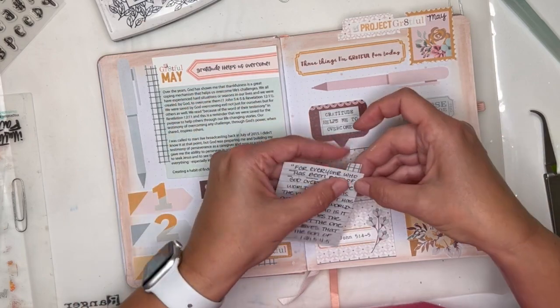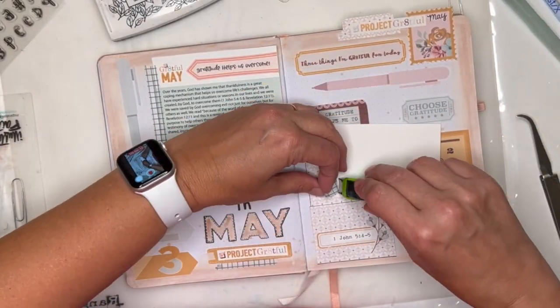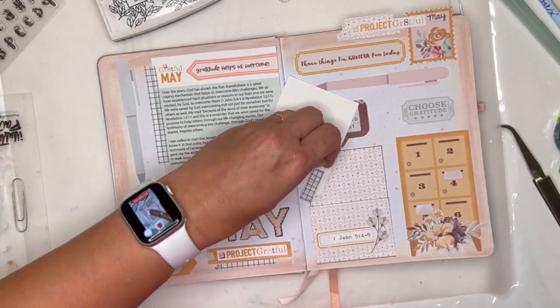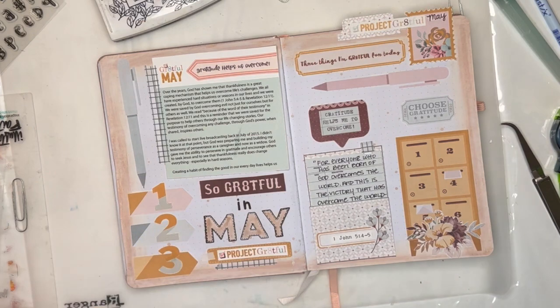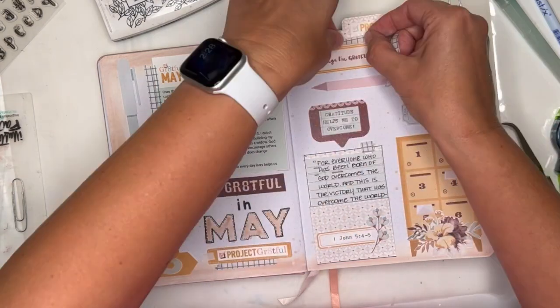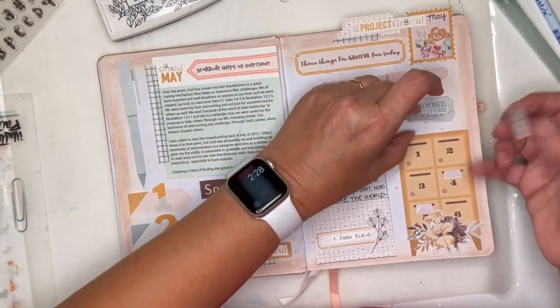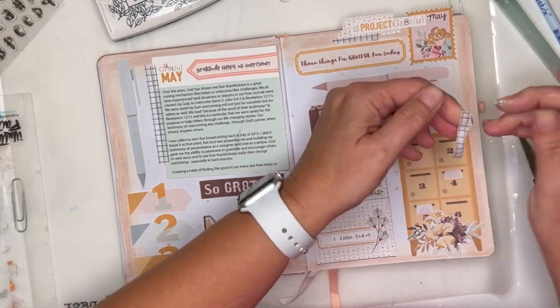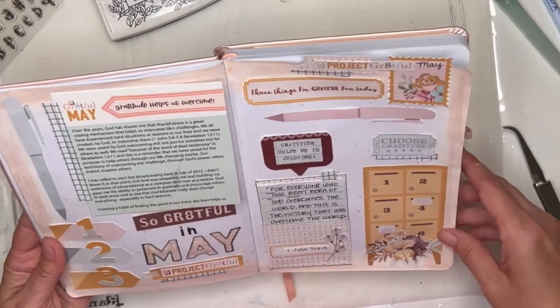I use the same washi tape that I adhered the journaling card and I'm just going to add that in a few places around my page. Make a little tag with my tiny attacher and that washi tape so that you can pull that card up and down. I'm going to add some up to the tab at the top right, then a little bit underneath that ticket that says 'choose to be grateful.'